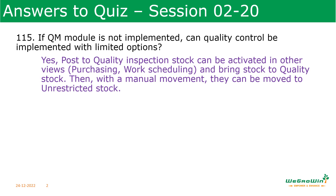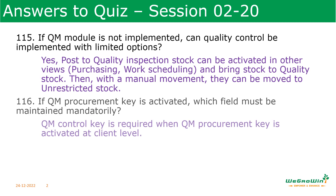From the quality inspection stock, materials can be moved to unrestricted stock by separate movement types. Next question: if the QM procurement key is activated, which field must be maintained mandatorily? The QM control key is required when the QM procurement key is activated at the client level, so QM control key is mandatory.